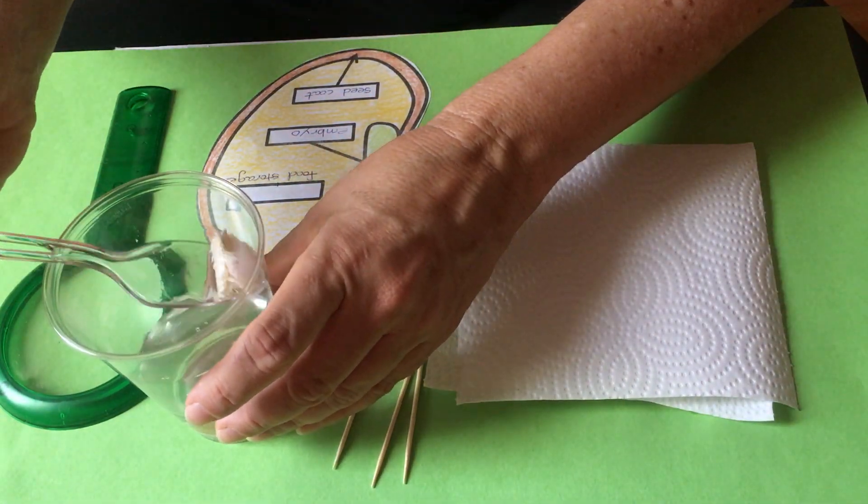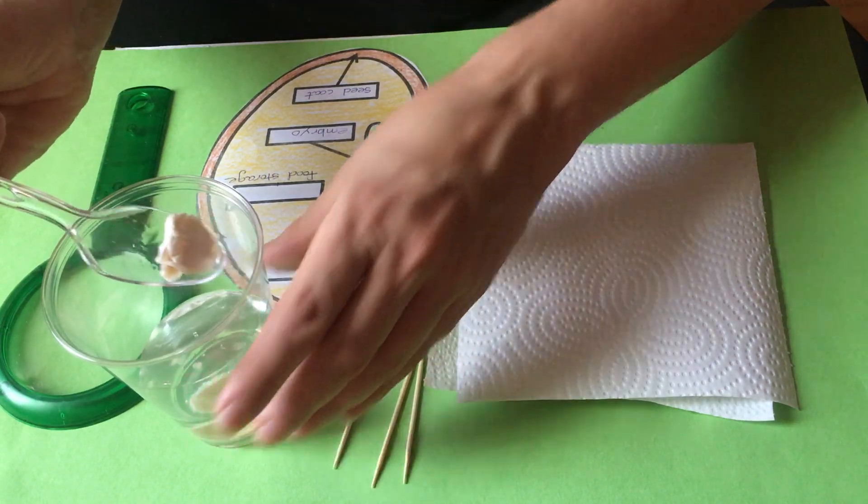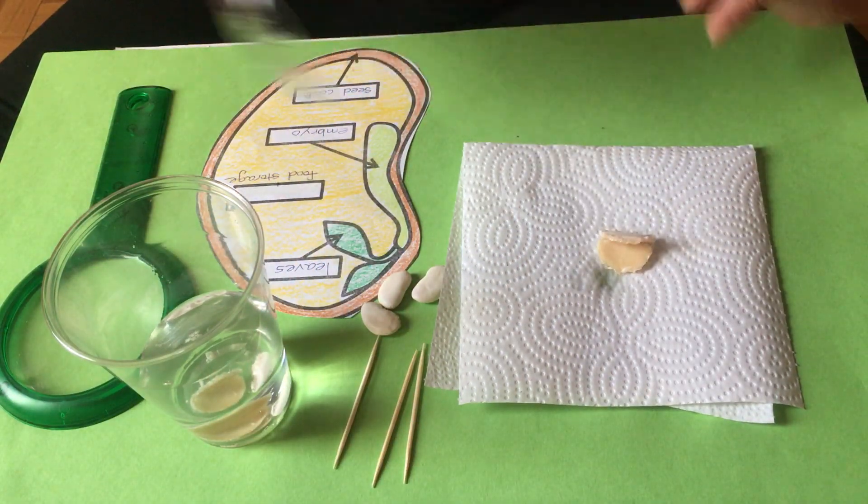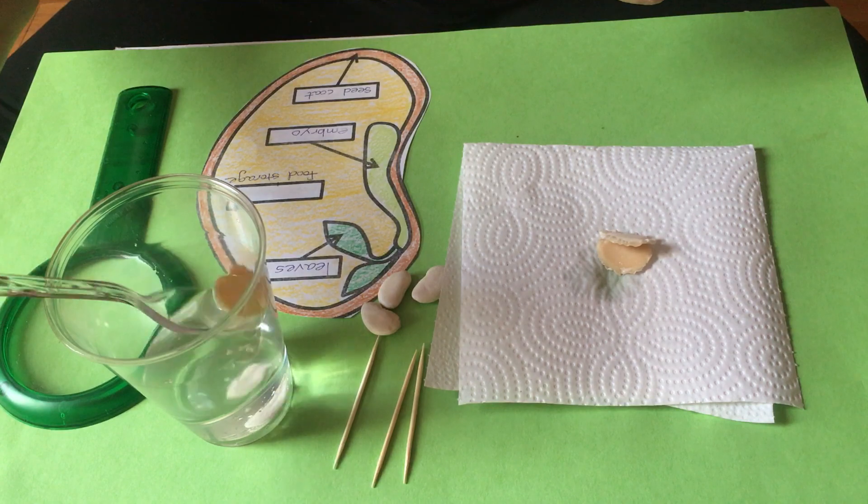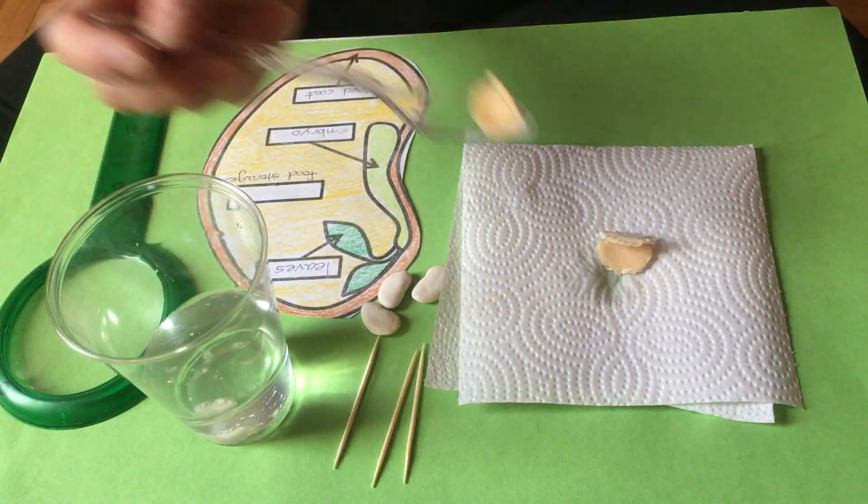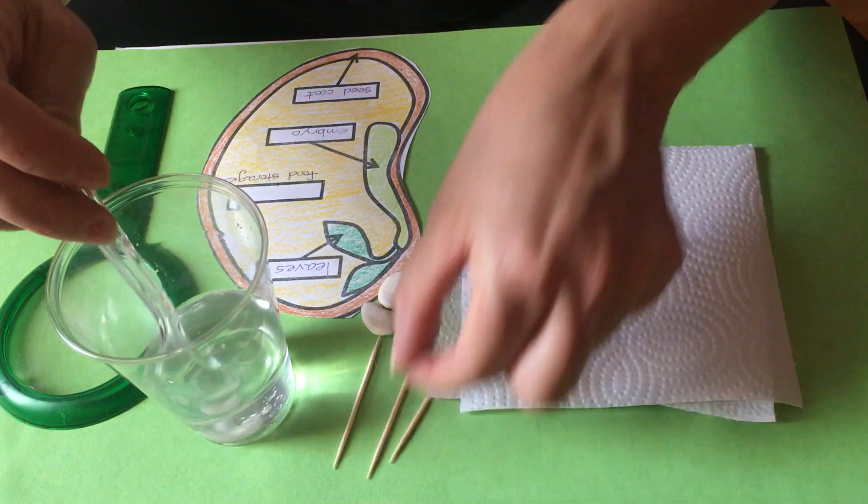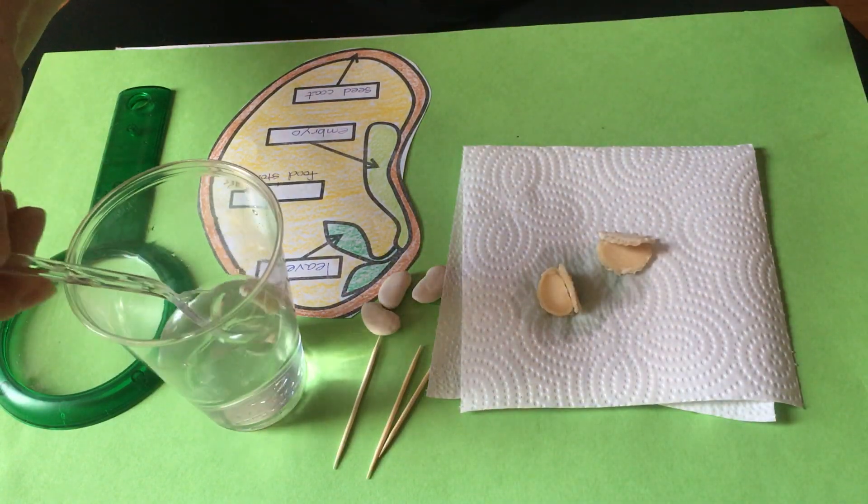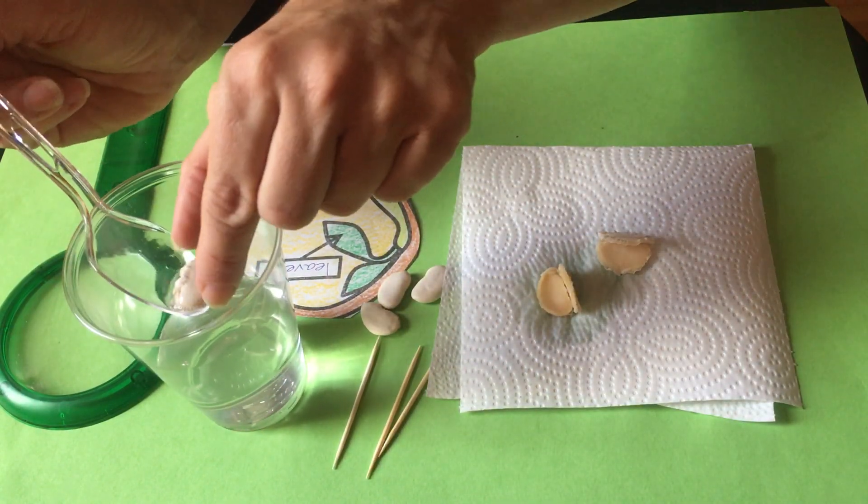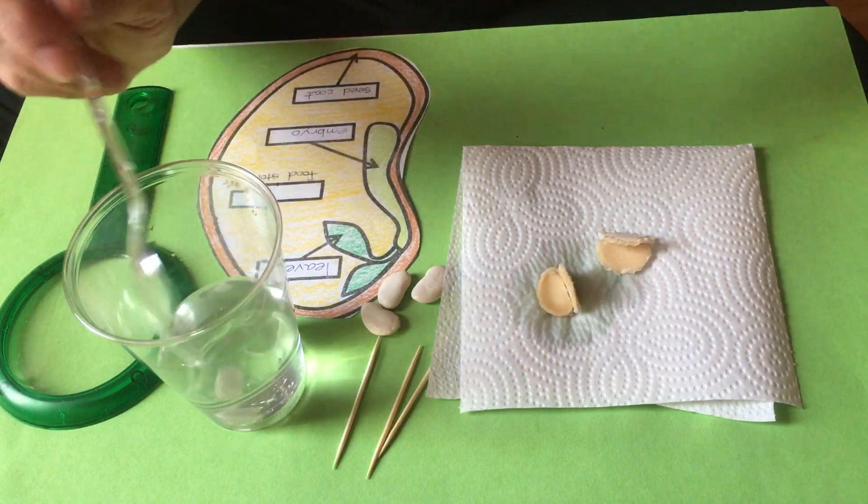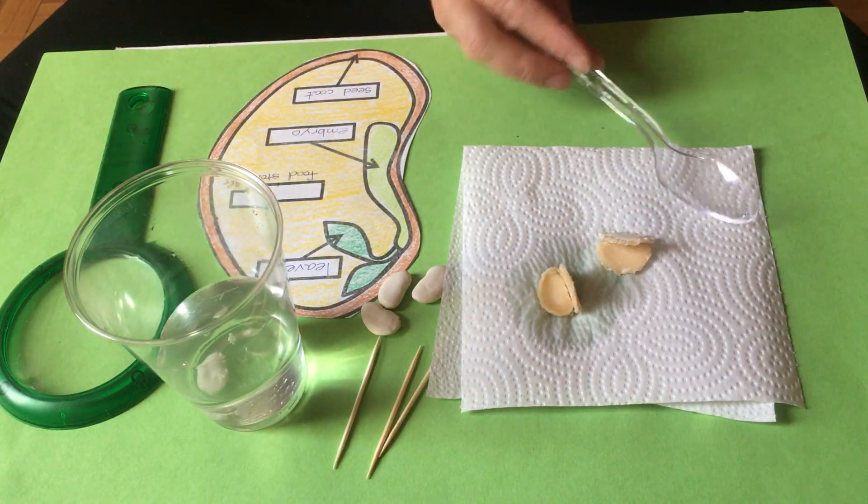Take them out one by one with your spoon and try to empty the water out, then put it on your paper towel. These two have already opened. Sometimes they're not as open as this and you have to use your toothpick to help you open the seeds. This one I'm going to leave in a little bit longer - he looks like he needs some more time to soak.